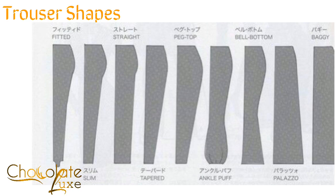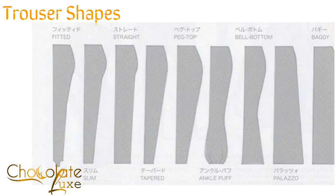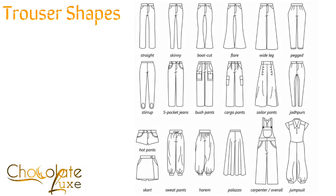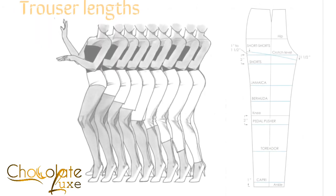Here you have different trouser shapes. If you search on Pinterest you would find a lot more. You can pause and notice the leg line shape — remember the leg line is where you get different shapes. This is the front view of different types of trouser shapes. There's even a jumpsuit and an overall, and just notice the leg line shape — that's what you use to distinguish different types of trousers.